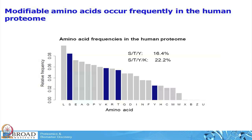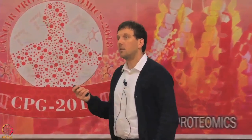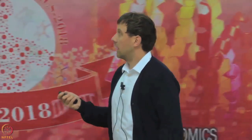These modifiable amino acids occur very frequently in the human genome. What you are looking at here are the frequencies of all 20 amino acids in the human proteome. The most frequent amino acid is leucine, but on second place we already find serine, which can be phosphorylated. Highlighted here are serine, lysines, threonines, and tyrosine — lysines can be modified by acetylation or ubiquitination. These four amino acids together make up 22 percent of all amino acids in the human proteome, so it is very likely that a mutation affects these modification sites.